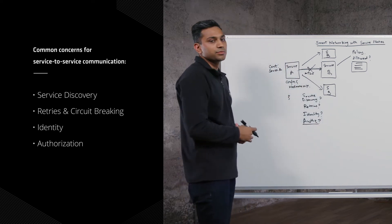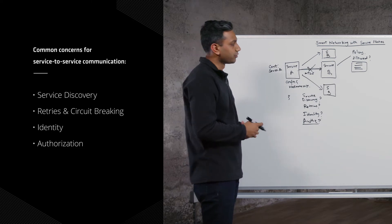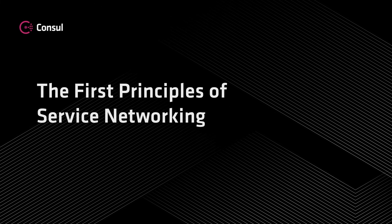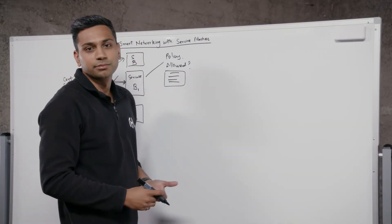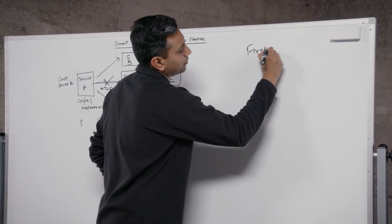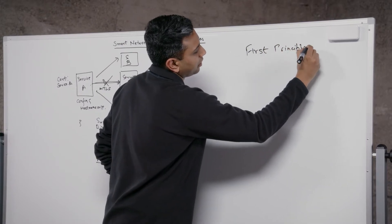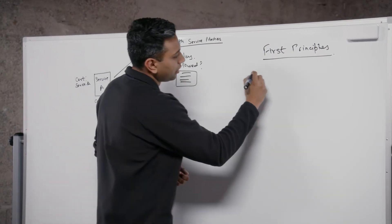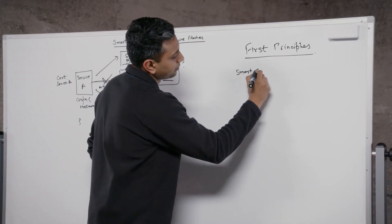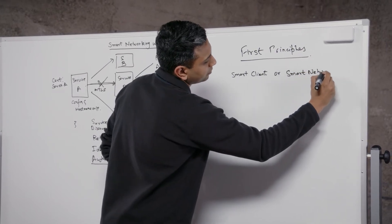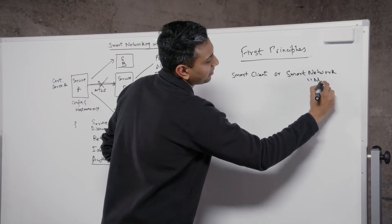These are some of the concerns when it comes to service-to-service communication, especially when you move into the world of microservices and especially if you're running these microservices on the cloud. So before we go any further, we'd like to explore some of the first principles behind service-to-service communication. There are two things I'd like to explore: one is the smart client approach, and the other is the smart network approach — or you could call it the smart mesh approach.